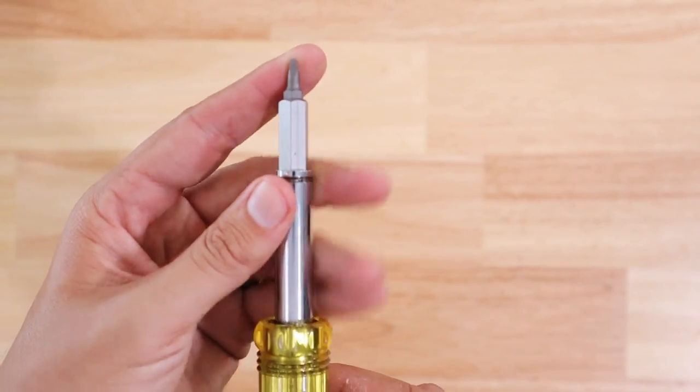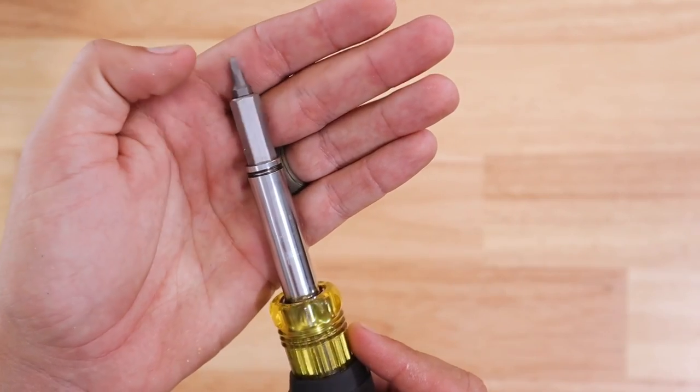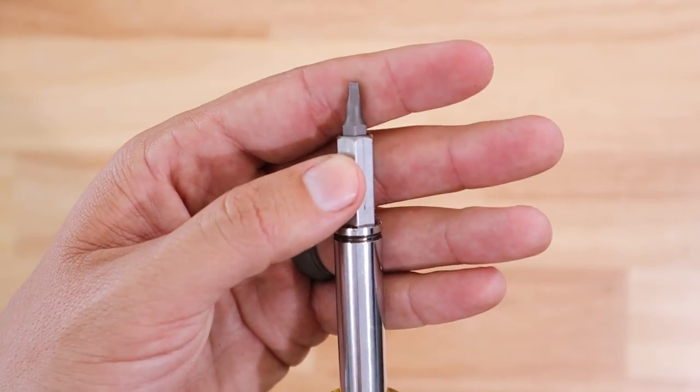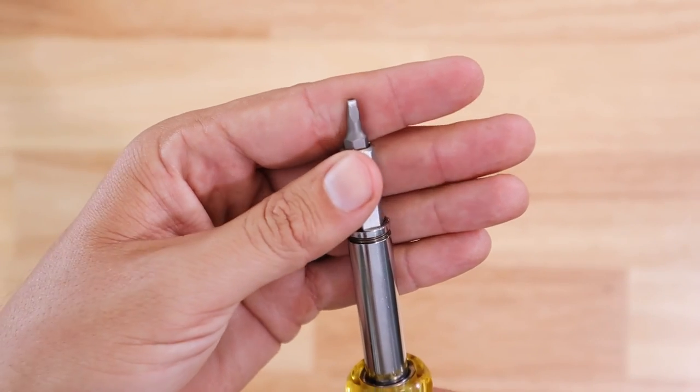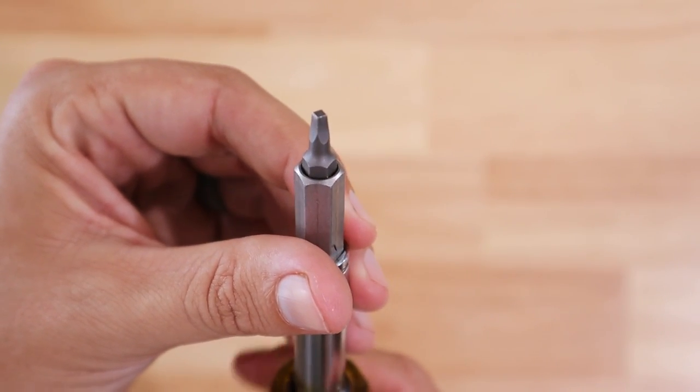But then when we get to the bit, this particular screwdriver comes with 11 different bits. So it's got your flathead, it's got your Phillips, it's got star bits or Torx bits. But the bit that I like to use the most and I've been using for a while with great success is this Robertson bit or some people will call it a square bit.